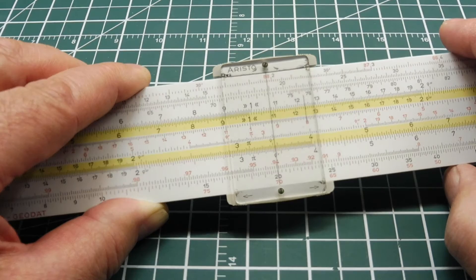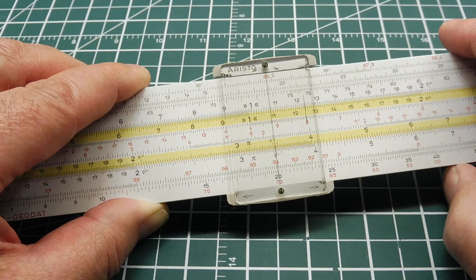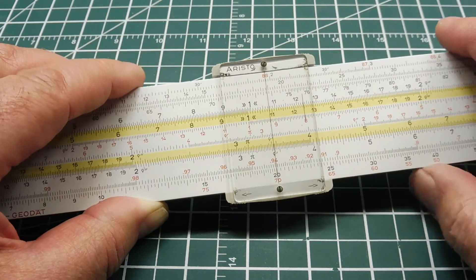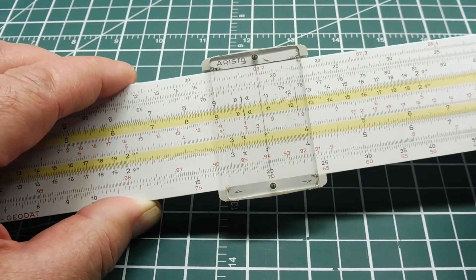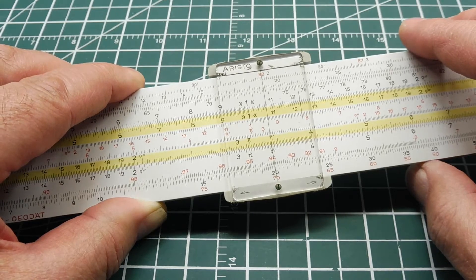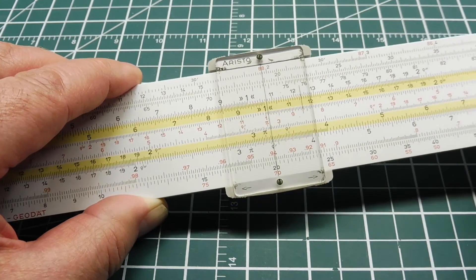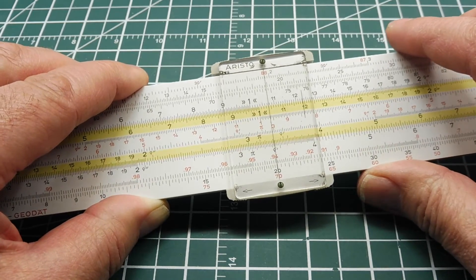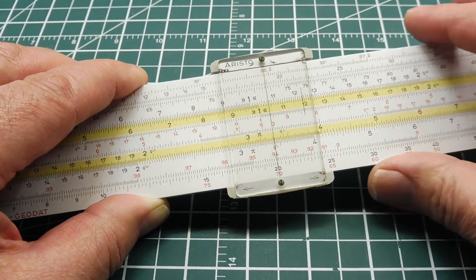Okay, back before the internet and before computers and calculators, this is what we used to solve mathematical problems, and it's called a slide rule. Now Richard Feynman and his team at the Manhattan Project used pencil and paper and slide rules and people to build the first atomic bomb, and NASA used this technology to put the first man on the moon.